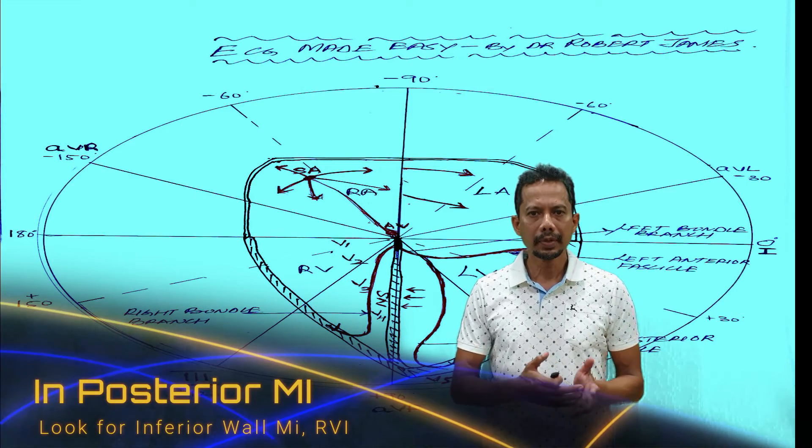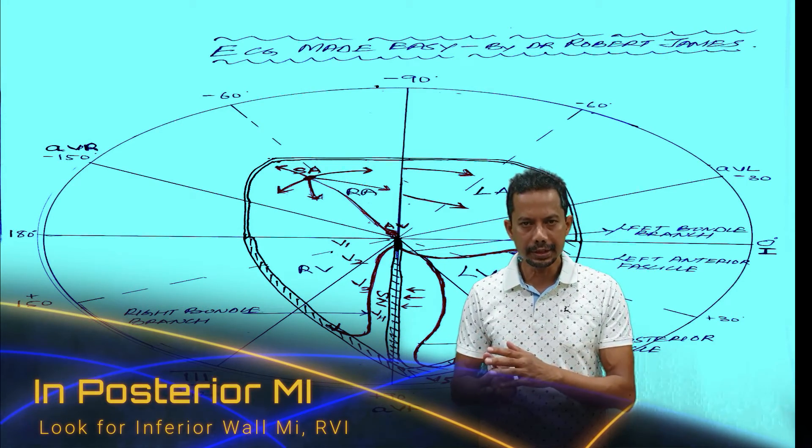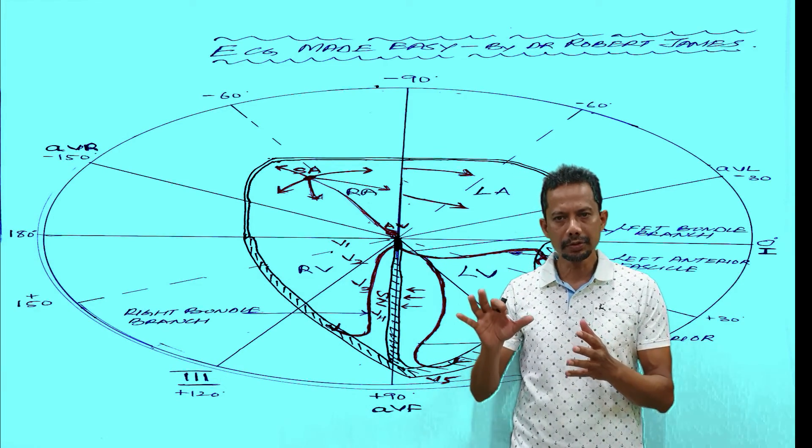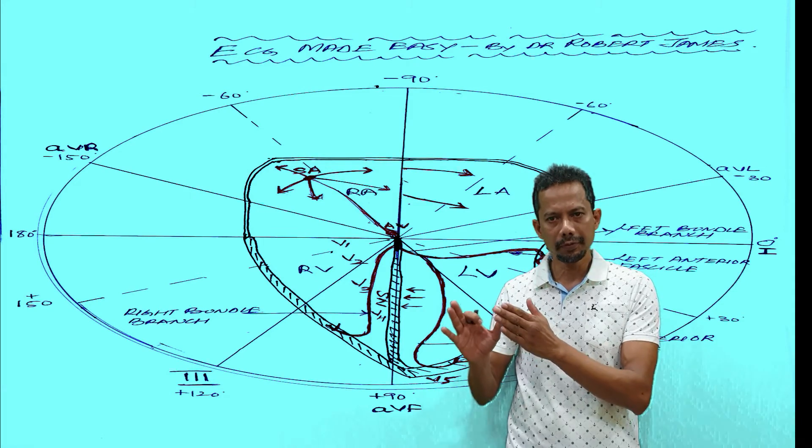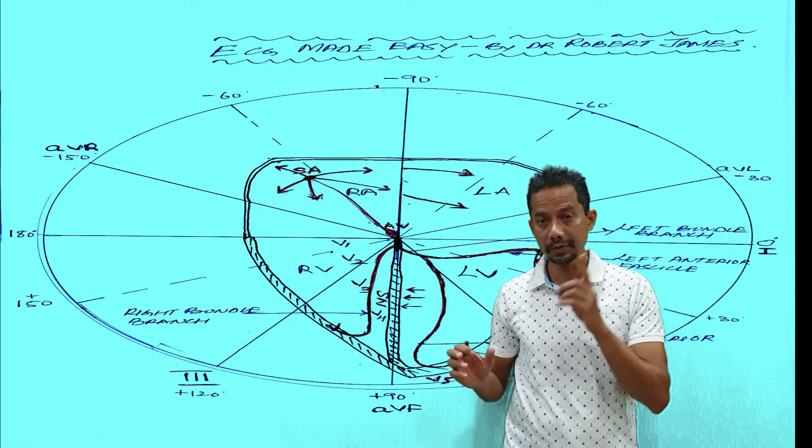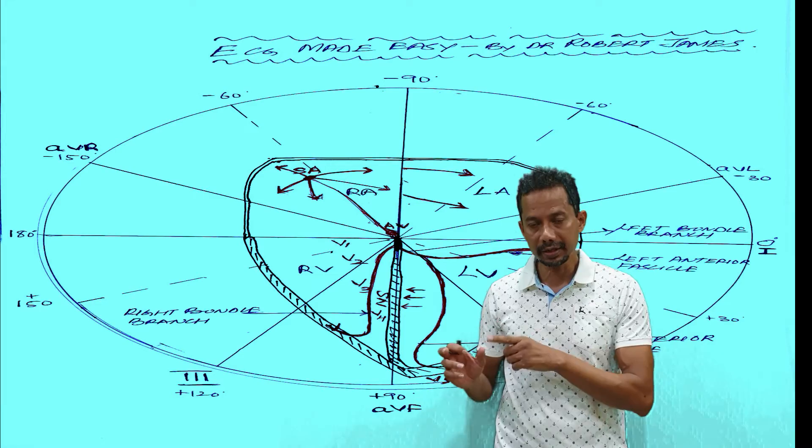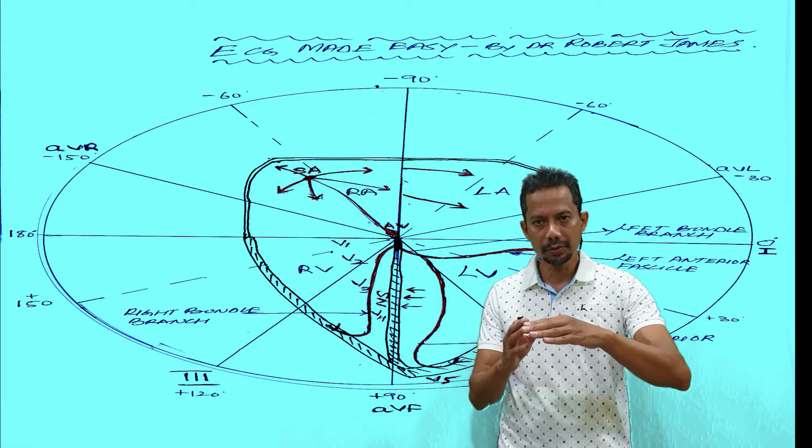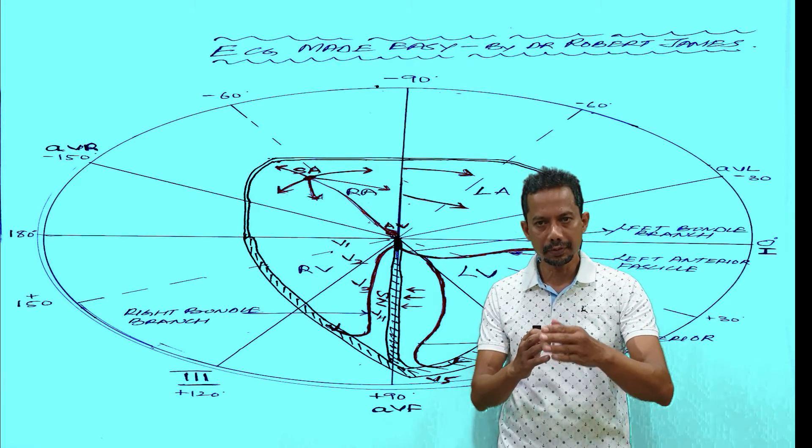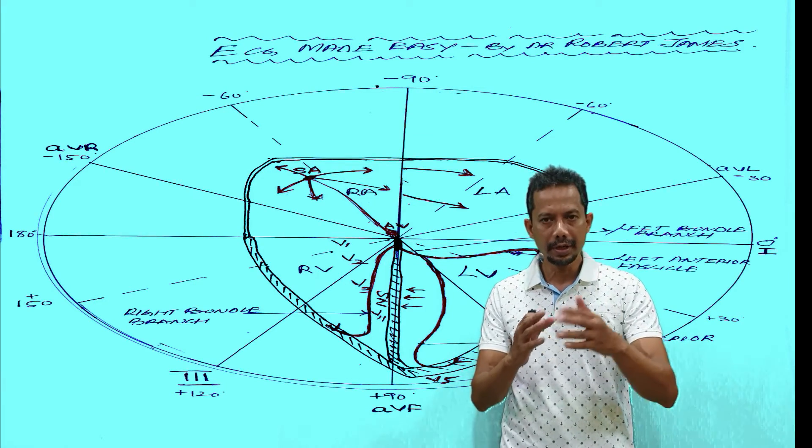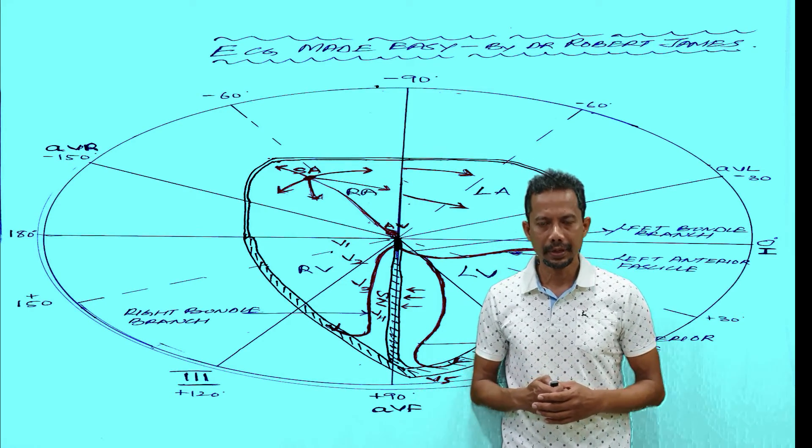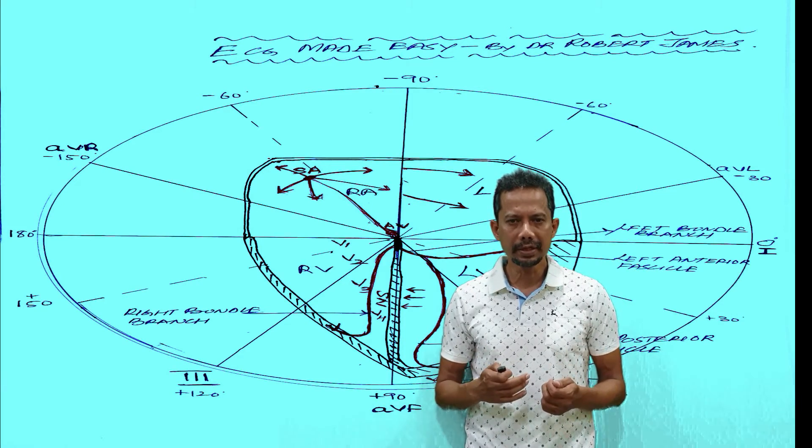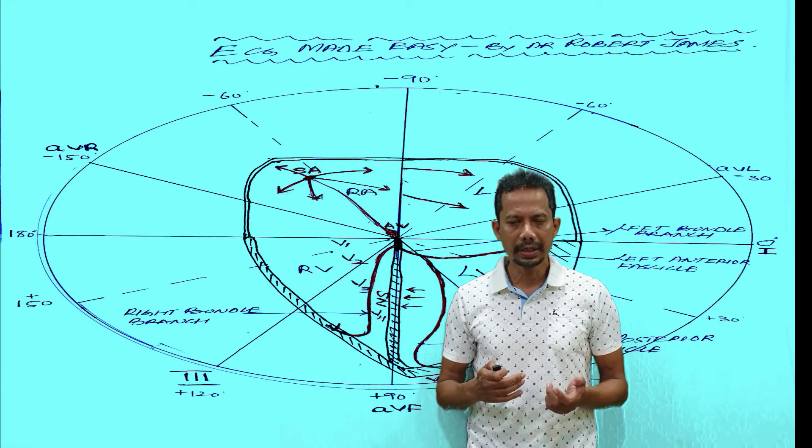Just to summarize, there is clockwise rotation and there is anticlockwise rotation. In clockwise rotation the transition zone shifts from beyond V4, between V4 to V5, V5 to V6 because of respiratory conditions like bad COPD. If there is right ventricular hypertrophy, the transition zone can shift before V3, so it can be between V2, V3, V1, V2, or in posterior wall infarction. The significance of transition zone in patient management is uncertain.